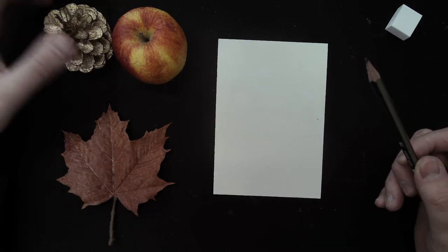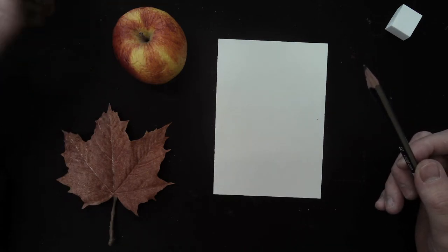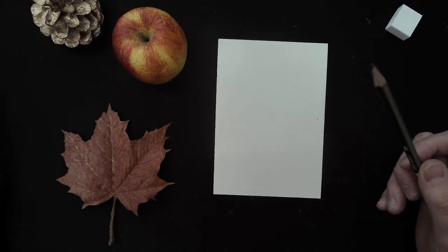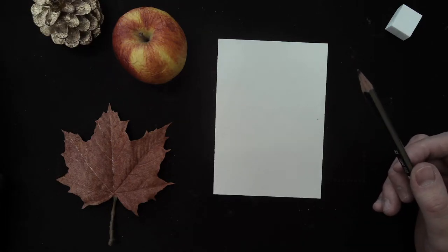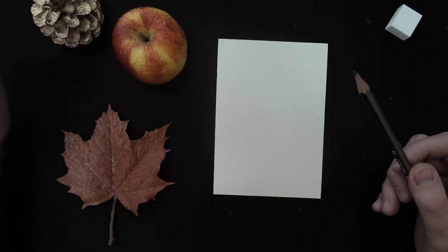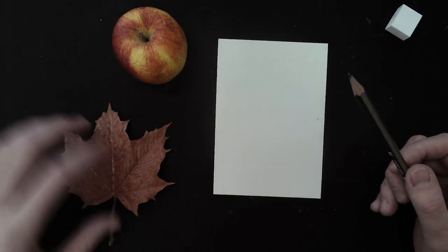You need to go and find a natural form object. It could be a pinecone, a piece of fruit, a leaf, a flower head, anything natural form, and you only need one. So I'm going to choose the apple.